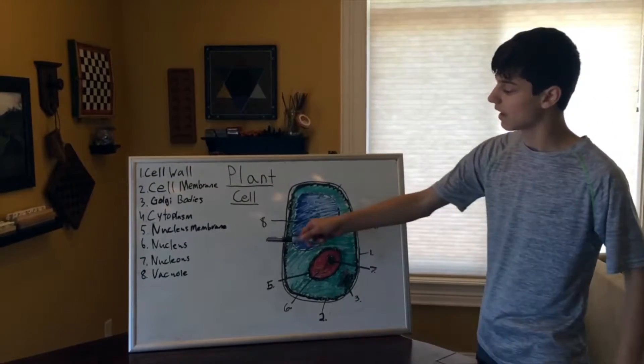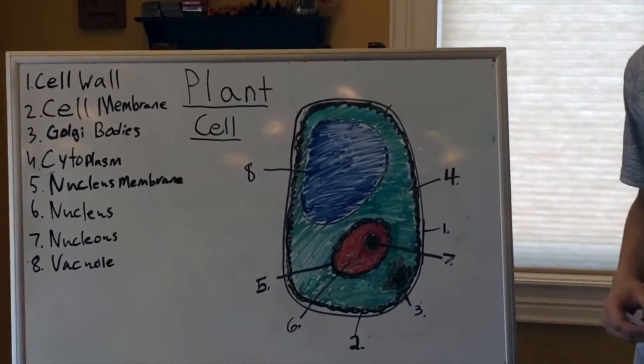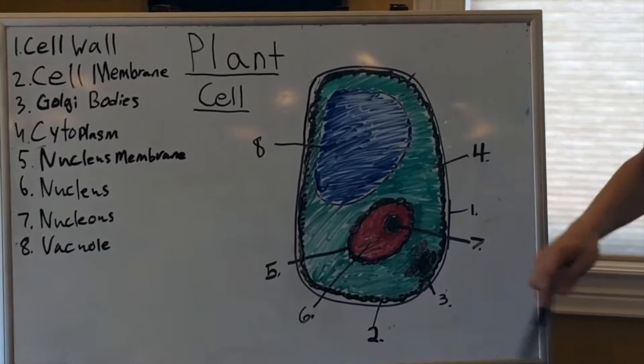In this plant cell, we have eight different parts. The first part is the cell wall, which is a thin layer made up of protein. It surrounds the cell.